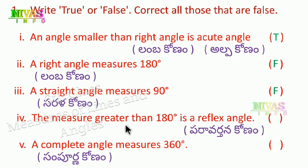Fourth problem: an angle with measure greater than 180 degrees is a reflex angle. A reflex angle is greater than 180 degrees. This is true.